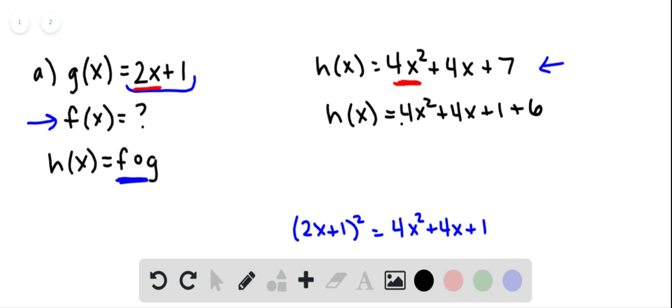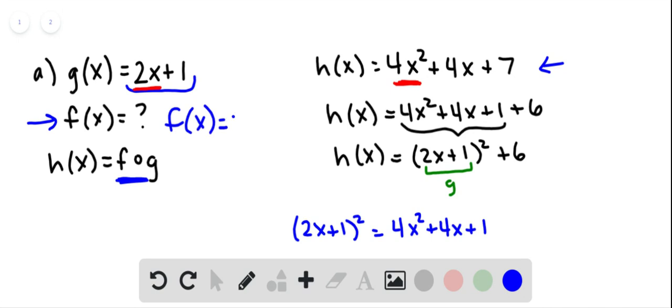And now we can rewrite that perfect trinomial square as 2x plus 1 quantity squared, and then we have the plus 6. So if we think of h in this way, we can see the inside function g is 2x plus 1, and the outside function must be then what we get when we square that and then add 6. So f of x is x squared plus 6.